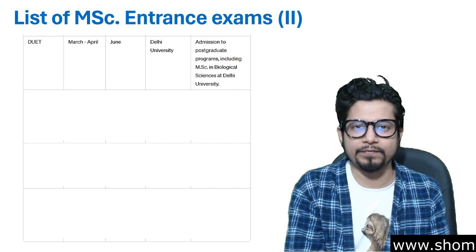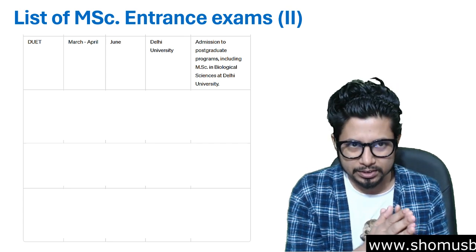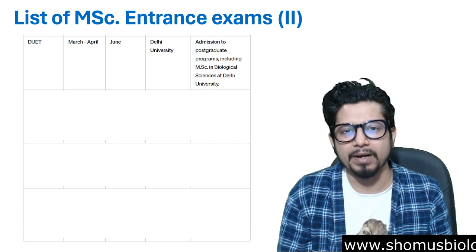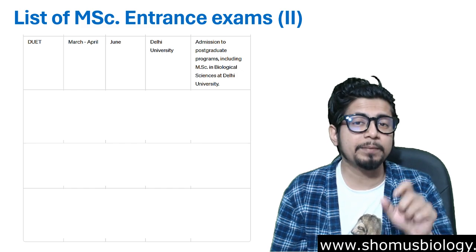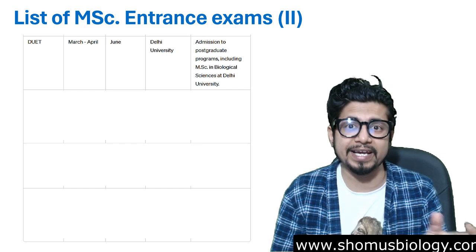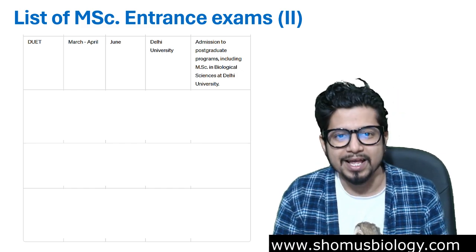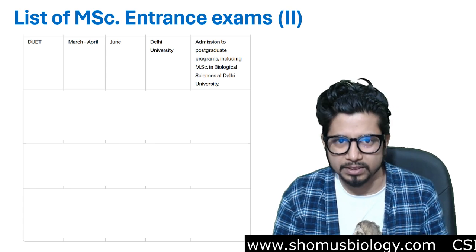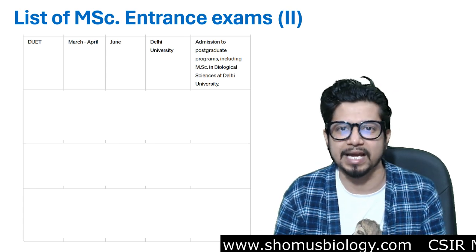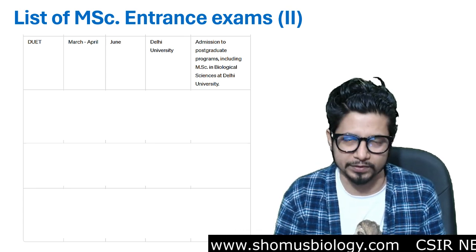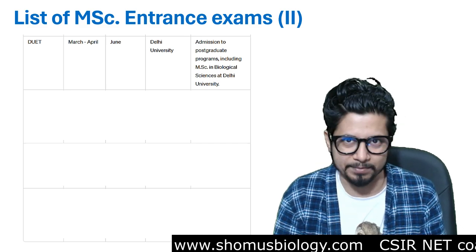The next exam is DUET — Delhi University Entrance Test. The application form period ranges from March to April and the exam month is June. It is conducted by Delhi University. The target for this examination is admission to postgraduate programs including MSc in biological sciences at Delhi University.